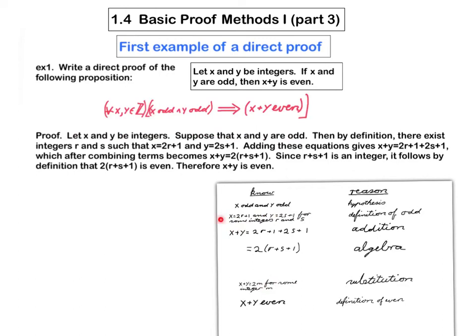So this line here got translated into this sentence. Then, by definition, there exist integers r and s, such that x is 2r plus 1 and y is 2s plus 1. I had the right to say, then, by definition, because we had just asserted that x and y are odd.